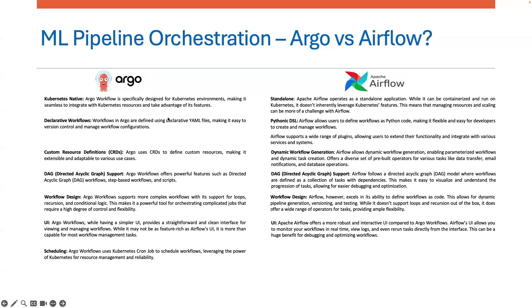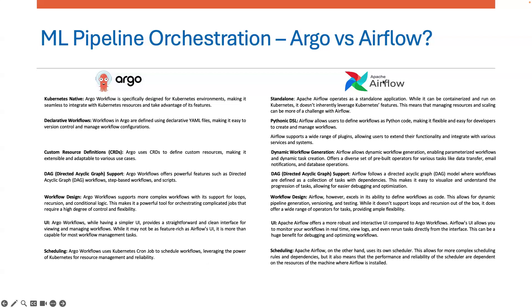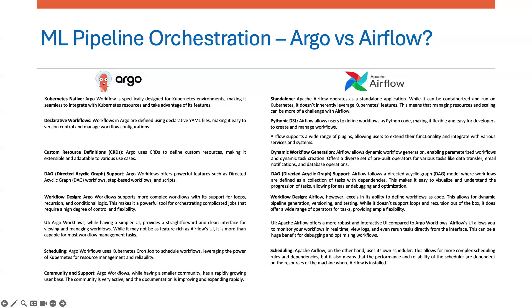Next is scheduling. Argo Workflows uses Kubernetes cron jobs to schedule workflows, leveraging the power of Kubernetes for resource management and reliability. Airflow uses its own scheduler, which allows for more complex scheduling rules and dependencies. However, the performance and reliability of Airflow's scheduler depend on the resources of the machine where it is installed, requiring a bit more management compared to Argo.